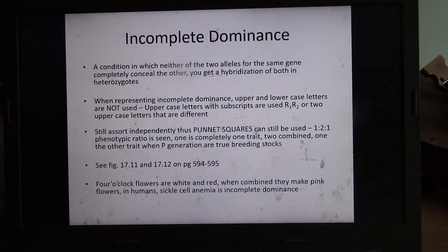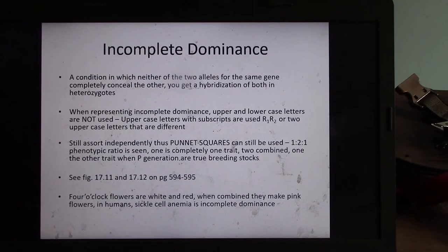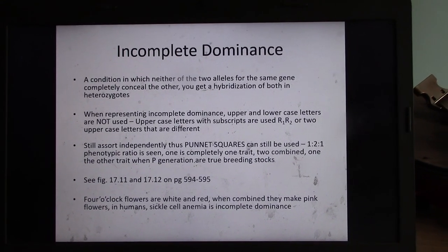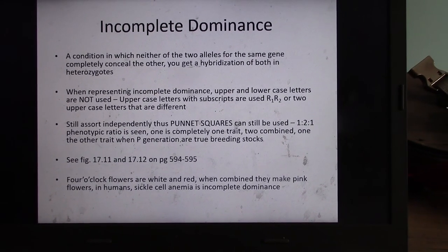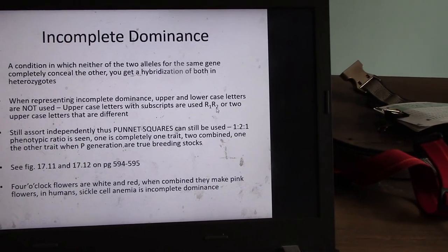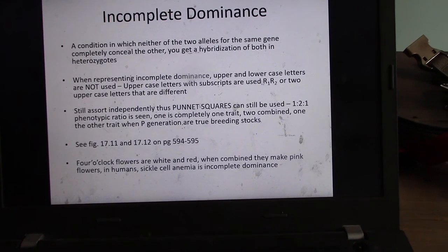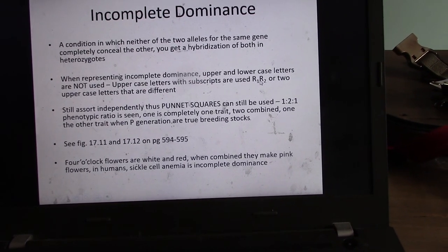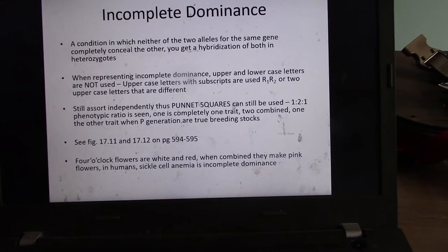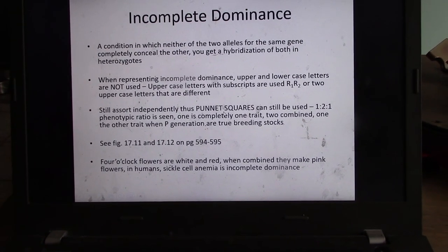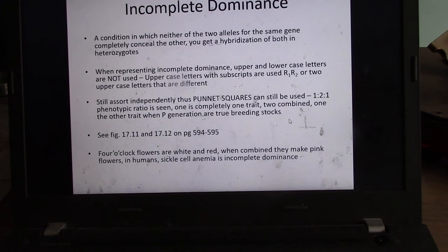So incomplete dominance is a condition in which neither of the two alleles for the same gene completely conceal the other. You get a hybridization of both traits. So there's a blending of the traits rather than an expression of one or the other. So when representing incomplete dominance, upper and lowercase letters are not used. Uppercase letters with subscripts are used here. Sickle cell anemia is an example of incomplete dominance. I'm going to show you that as well. So they still are stored independently, but you have two dominant traits. This is called polygenic traits, where you have multiple alleles that are expressed in a dominant fashion. But all of these incomplete dominant individuals will show a 1 to 2 to 1 ratio of offspring when two heterozygotes are combined.